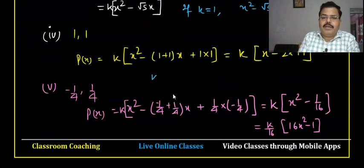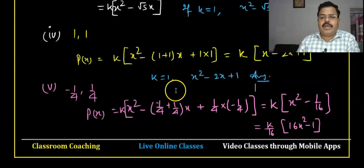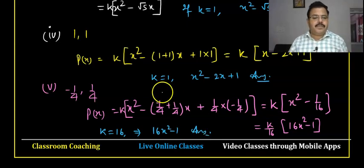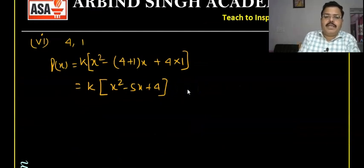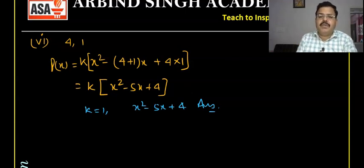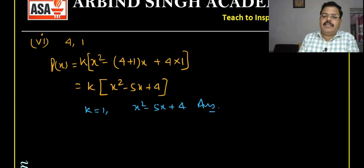If I put k = 1 for the fourth question, the polynomial will be x² - 2x + 1. For the fifth question, putting k = 16 gives the polynomial 16x² - 1. For the sixth question, k = 1 gives x² - 5x + 4. You can write the answer with k as an arbitrary constant and there will be no problem, since the polynomial is in the form x² + bx + c.